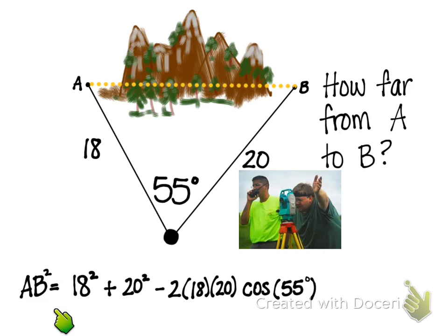Right now the equation has this distance squared, so we're going to take the square root to figure that out, plug that into our calculator, and we get that the distance is 17.6 units. This is a very useful application for the law of cosines.